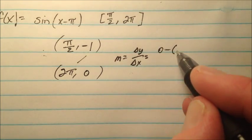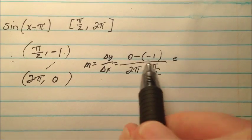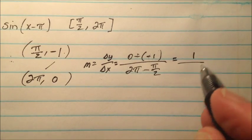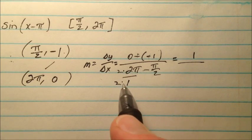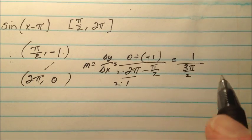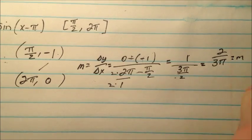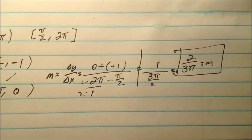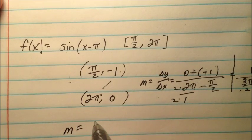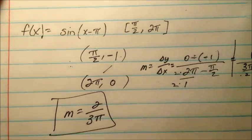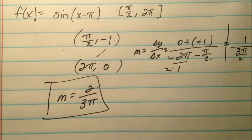We find the slope of that secant line. Change in y over change in x: 0 minus negative 1 over 2 pi minus pi over 2. The top is 1. The bottom is 2 pi minus half pi — converting: 4 pi over 2 minus 1 pi over 2 gives 3 pi over 2. So the slope is 1 divided by 3 pi over 2, which means we take the reciprocal. That gives us 2 over 3 pi as our slope.